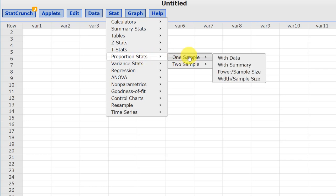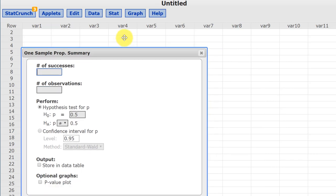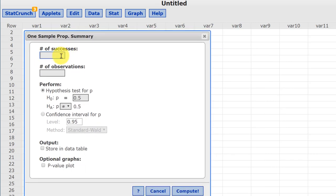So we bring up the dialog box. We're given the number of successes which was 443. The observations was 1,000. We're going to make sure that's checked to perform the hypothesis test for the population proportion P. The assumed value is 0.45 and we will make sure that the alternative is the complement which is the not equal. And we're going to go ahead and get the P value plot down here.